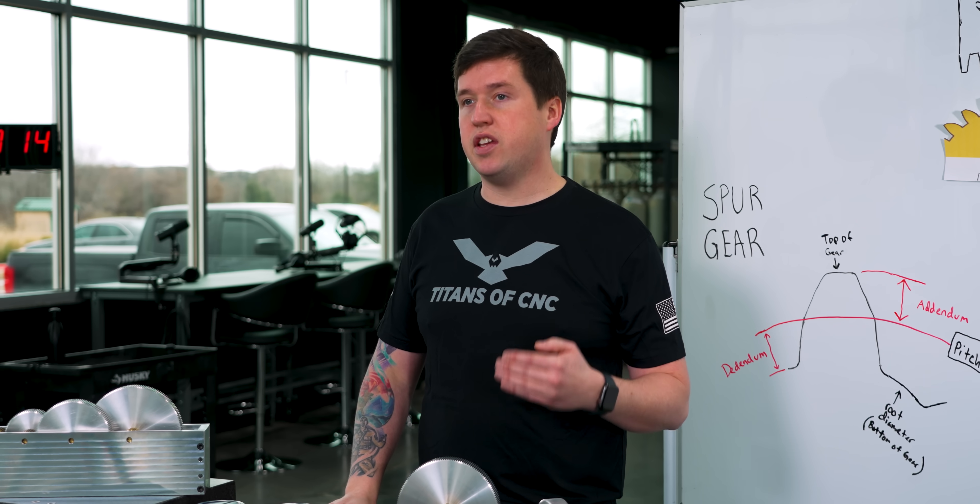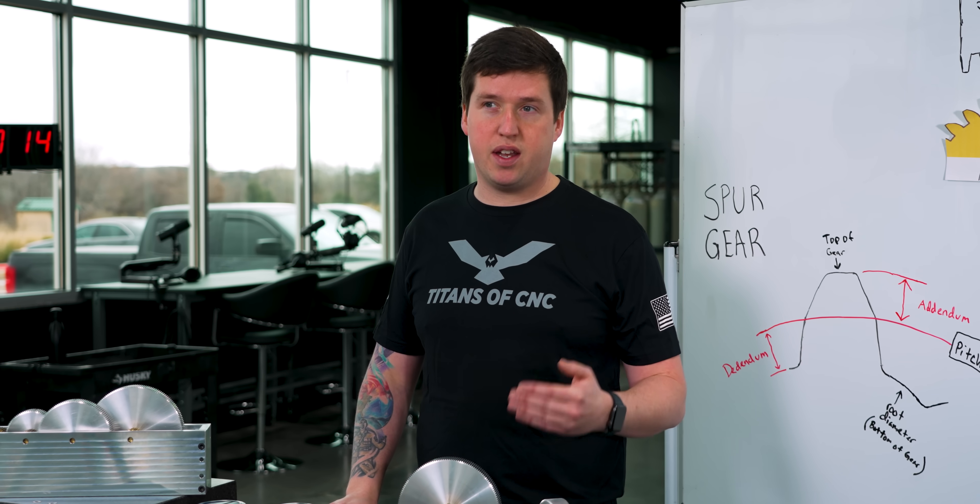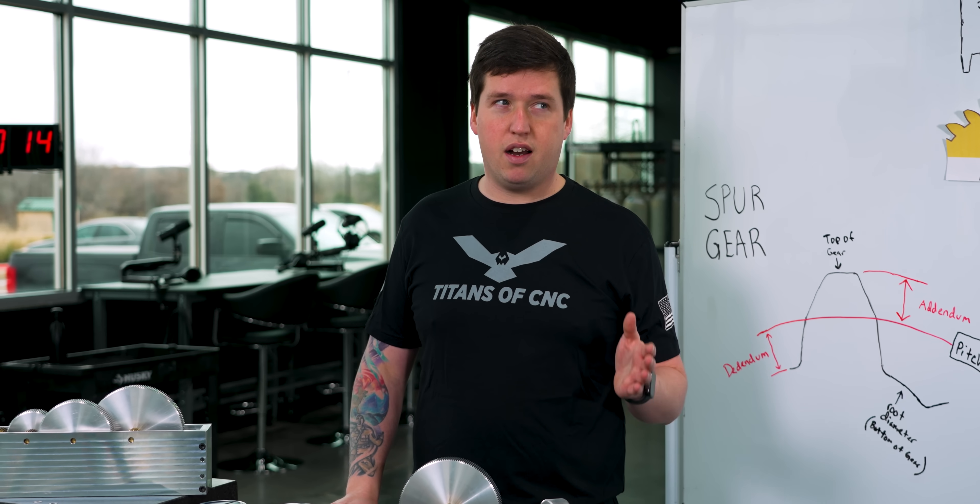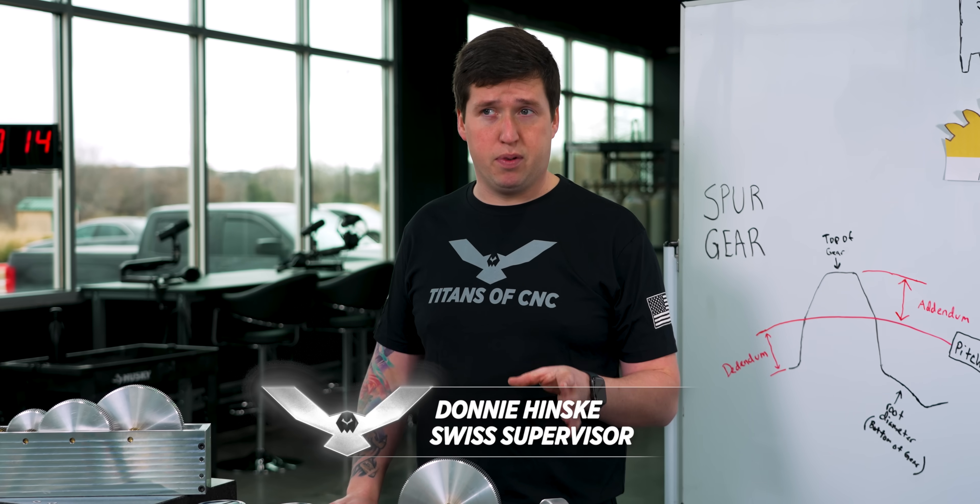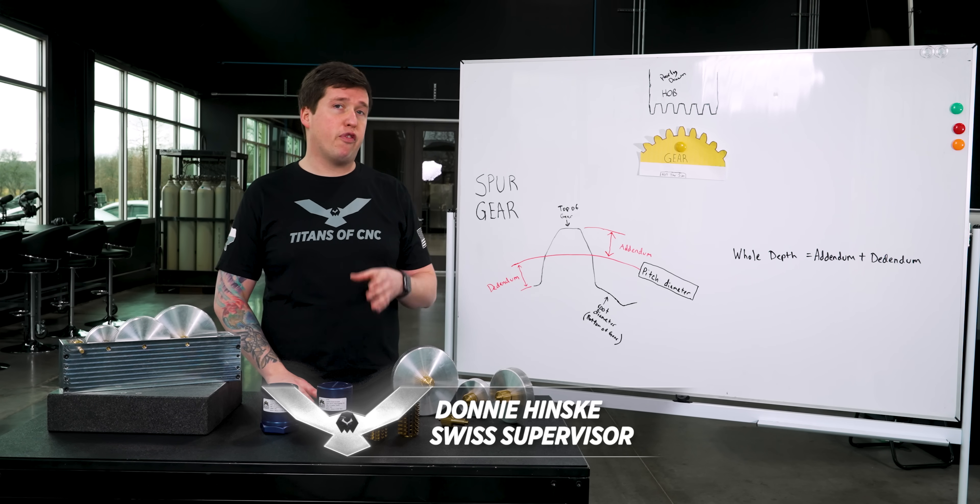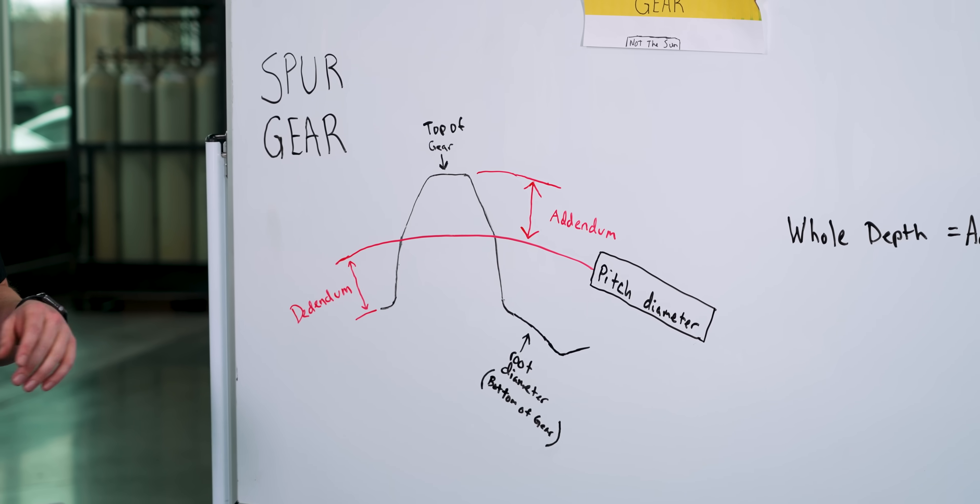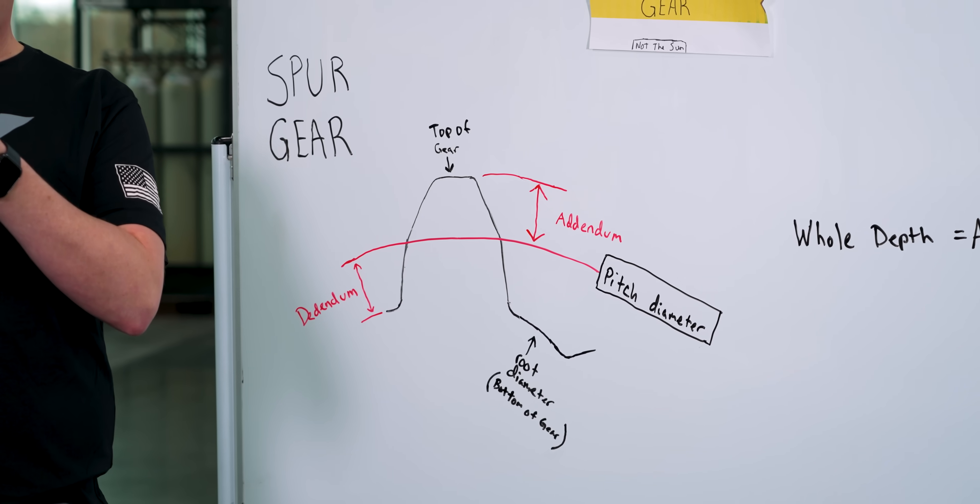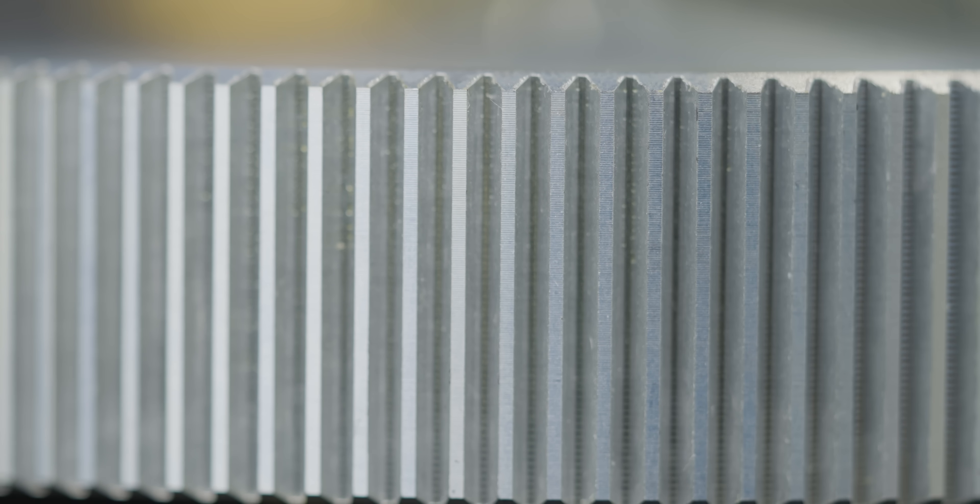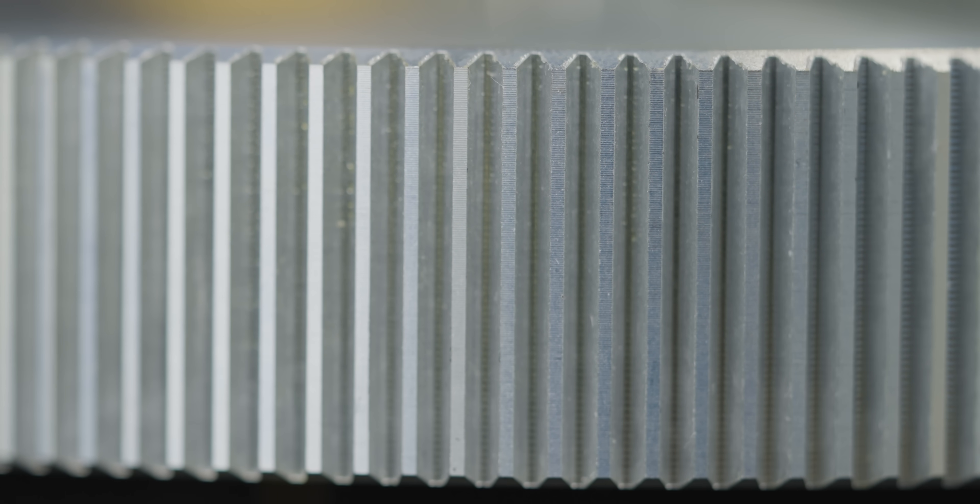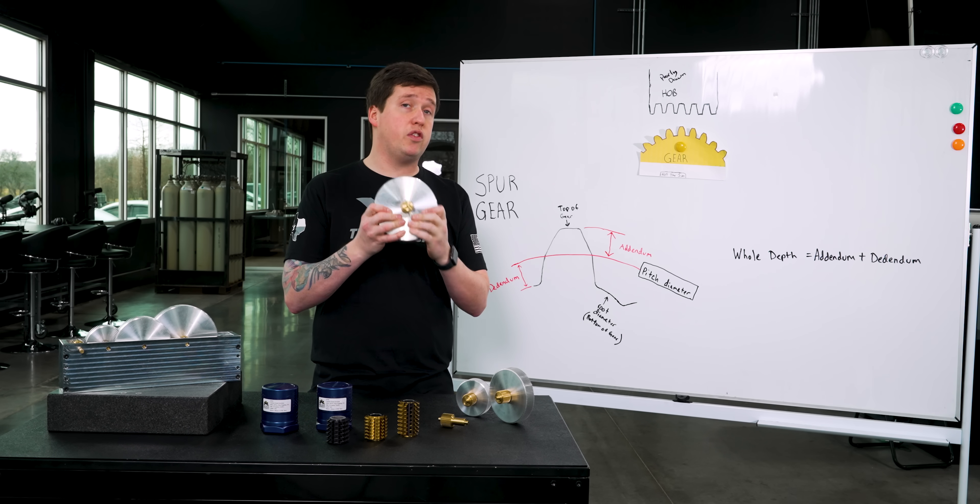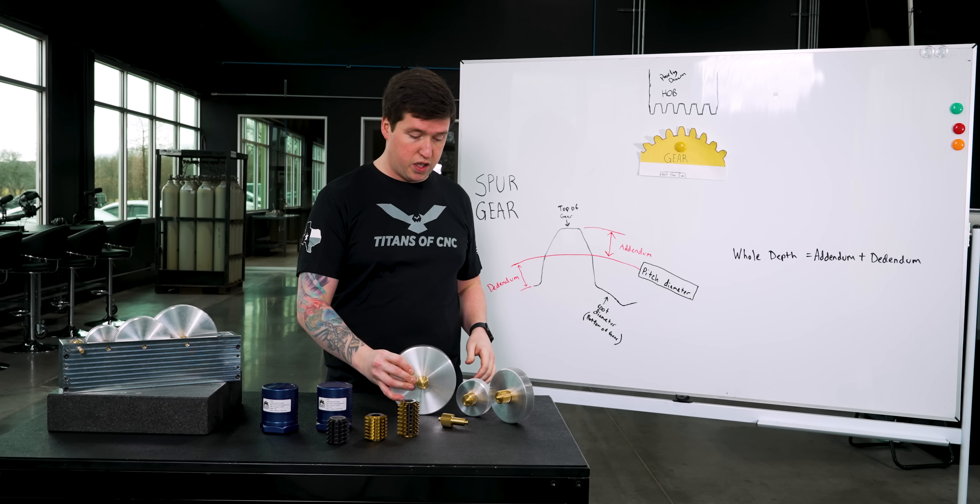So before we go into how to actually use a hob, I want to explain some things about gears. It'll make understanding what's actually going on a lot simpler. So with a gear, you have a few things you need to know. Right here, I drew a nice 2D version of a spur gear. Now what is a spur gear? A spur gear is simply when the teeth go straight on a gear. You have helical gears, you have herringbone gears, you have all sorts of different types of gears. But in this video, we're only doing spur gears.